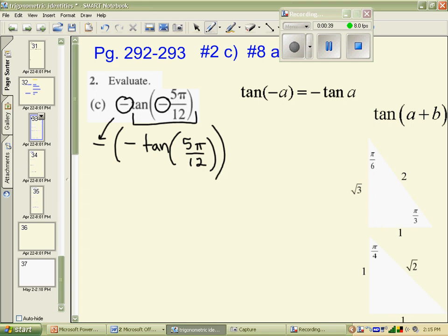Now, these two negatives, of course, multiply to make a positive, meaning that we can ignore those negatives. Now, we're stuck with tan of 5π over 12, which we cannot evaluate simply by looking at our special triangles, because 5π over 12 is not one of the angles that we see over here.